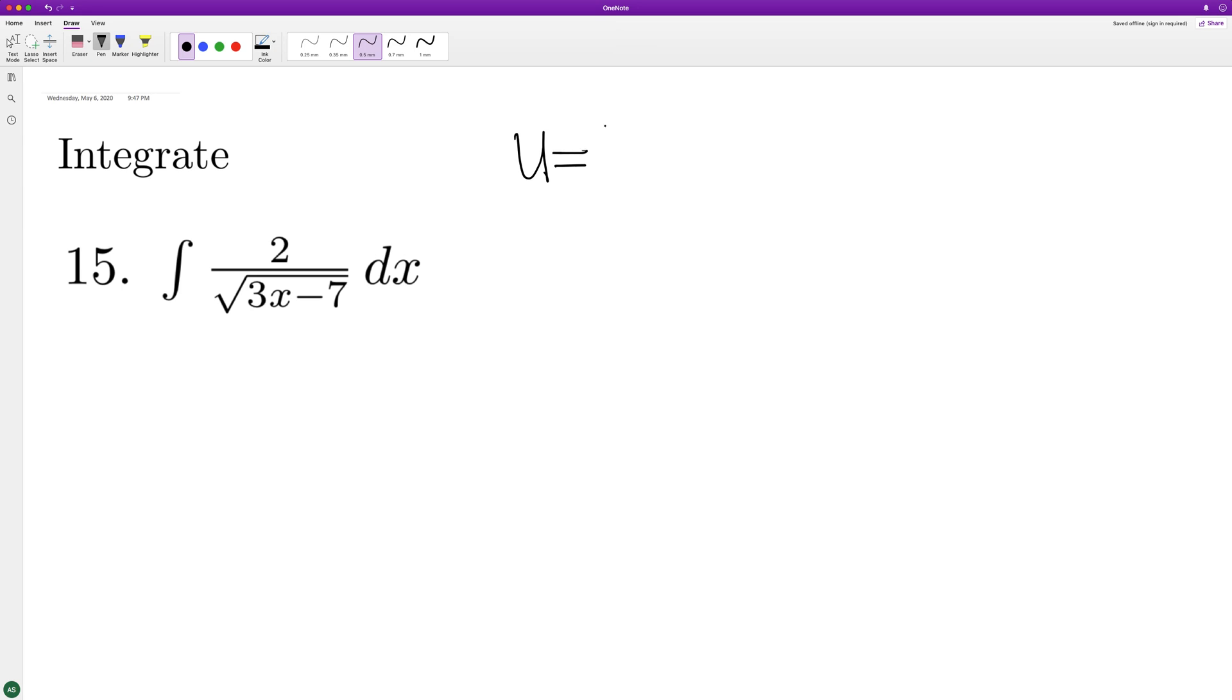So we'll use U substitution. We'll set U equal to 3X minus 7, and DU equal to 3.